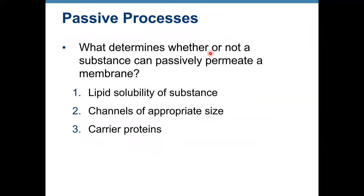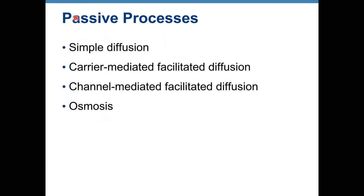What determines whether or not a substance can passively permeate a membrane? Lipid solubility — if it's lipid soluble, it can pass through the membrane. Also, channels of appropriate size or carrier proteins. Here are four major types of passive transport: simple diffusion, carrier-mediated facilitated diffusion, channel-mediated facilitated diffusion, and osmosis.